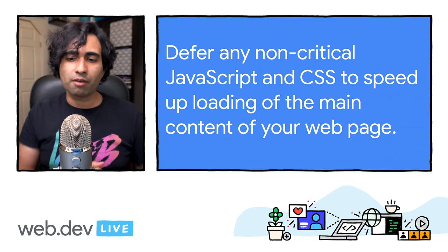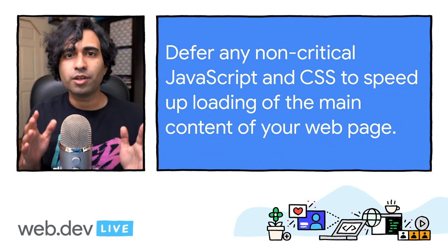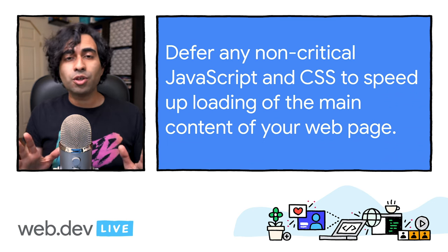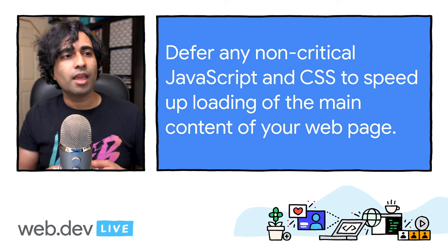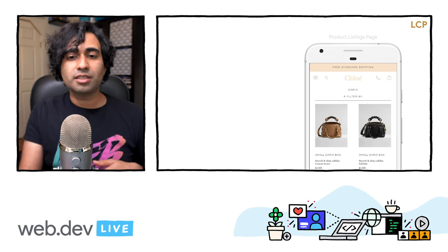Defer any non-critical JavaScript and CSS to speed up loading the main content of your page. Before a browser can render any content, it needs to parse HTML markup into a DOM tree. The parser pauses if it encounters external style sheets or synchronous scripts. Scripts and style sheets can both be render-blocking resources, which can delay your First Contentful Paint and consequently your Largest Contentful Paint. Let's look at the product listings page for Chloe.